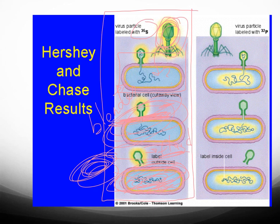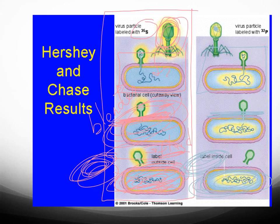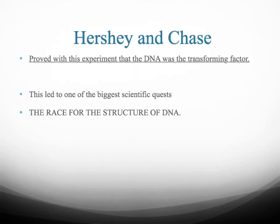Then they repeated the experiment, this time labeling the DNA inside the head of the virus with P32. They again let it infect the bacterial cell, dislodged it with a blender, and put it in a centrifuge. This time they found the pellet was radioactive — where the bacterial cells were — not the fluid. This experiment proved without a shadow of a doubt that DNA was the transforming factor.